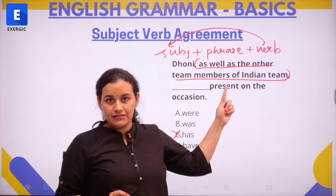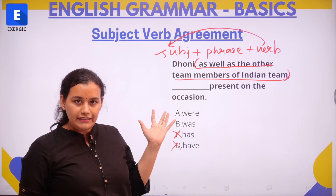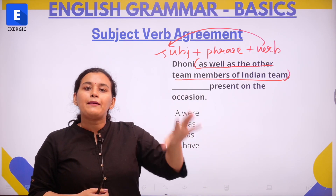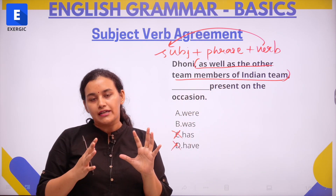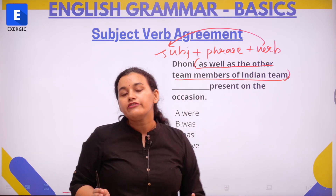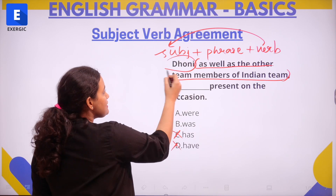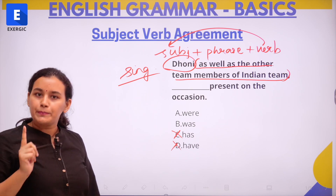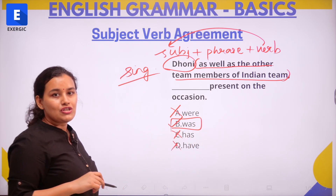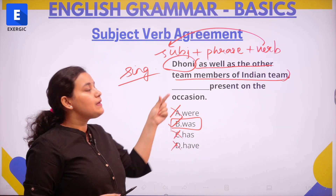This kind of phrase, also known as a connective phrase, does not change the number of the subject. It is called a connective phrase because it is connecting two sentences — instead of saying "Dhoni was present" and "other members were present" separately, we combine them. Connective phrases do not change the number of the subject, so since our main subject is singular, the verb is also going to be singular and the correct answer is "was".